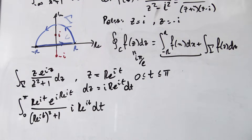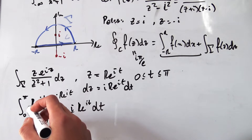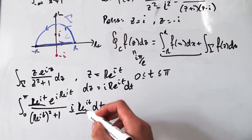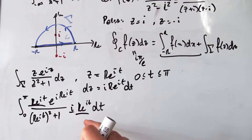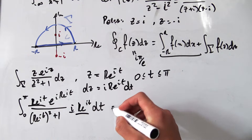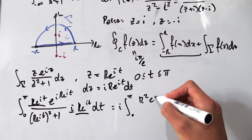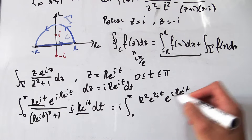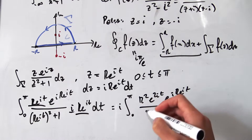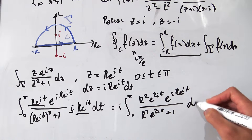That's a bit of a mess, so let's clean things up. Pulling i out to the front and multiplying R·e^(it) by R·e^(it) gives R²·e^(2it). After expanding the denominator, we get i times the integral from 0 to π of R²·e^(2it)·e^(i·R·e^(it)) / (R²·e^(2it) + 1) dt. The R² is just a constant, so we bring it out front.